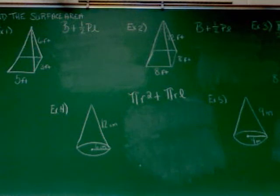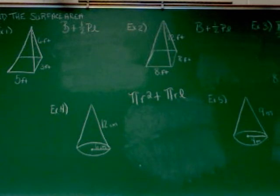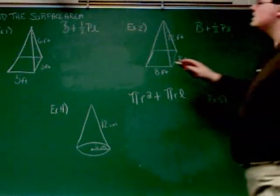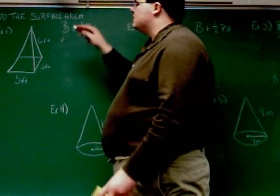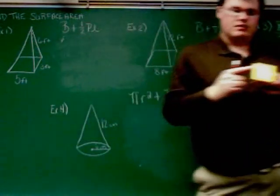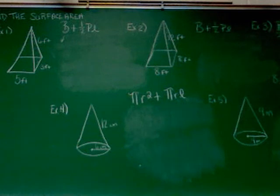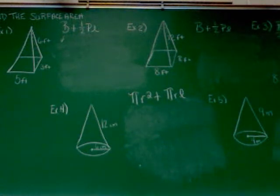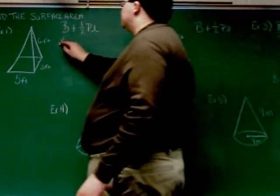Let's go ahead and take a look at example one. It's a rectangular pyramid because the bottom is three by five. The formula is B plus one-half PL. First thing is B, the area of the base. For a rectangular shape, it's length times width. One side is five, the other side is three, so we're talking about five times three, which is 15.